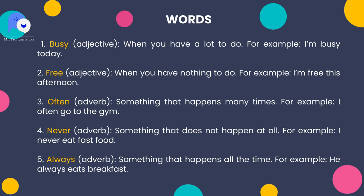3. Often — something that happens many times. For example, I often go to the gym. 4. Never — something that does not happen at all. For example, I never eat fast food. 5. Always — something that happens all the time. For example, he always eats breakfast.